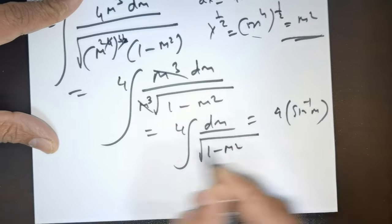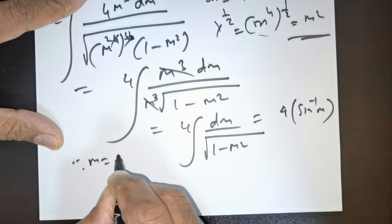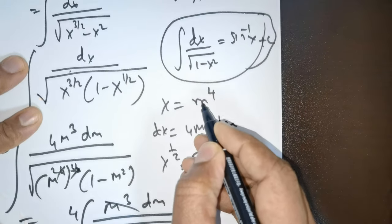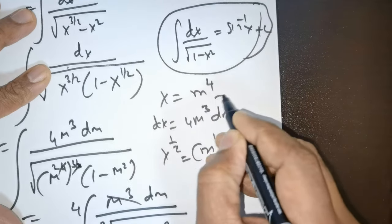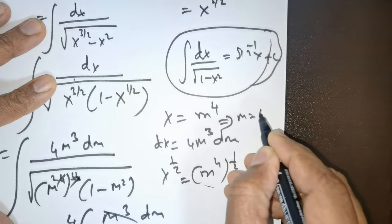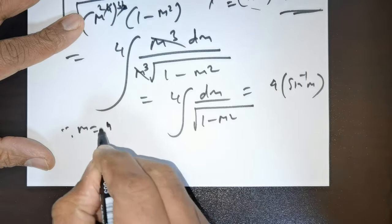But what is m? m is equal to, watch here, m to the power of 4 equals x. So this means m equals fourth root of x.